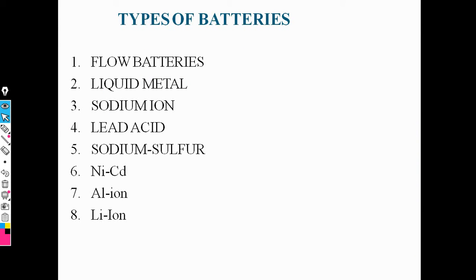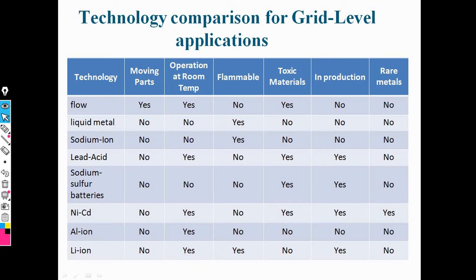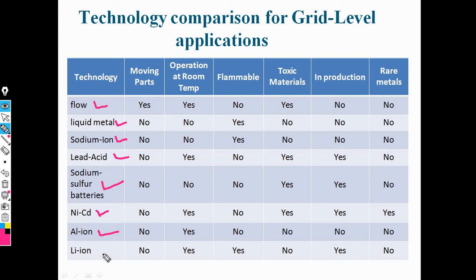There are different types of batteries used in smart grid storage technology: flow batteries, liquid metal batteries, sodium ion batteries, lead acid batteries, sodium sulfur batteries, nickel cadmium batteries, aluminum ion batteries, and lithium ion batteries. A technology comparison for grid-level applications covers all these battery types.